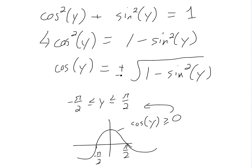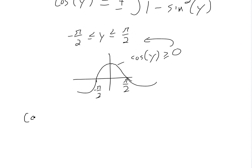So basically we don't need this negative here. So we get rid of the negative, we're going to have cosine y is equal to plus, or just square root of 1 minus sine squared y.